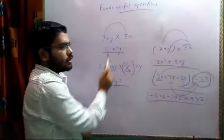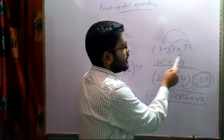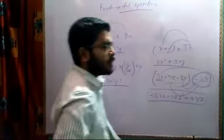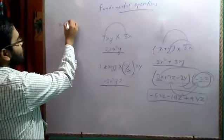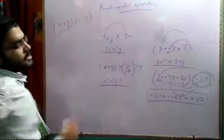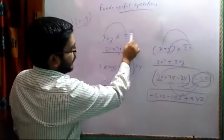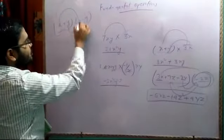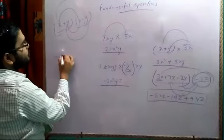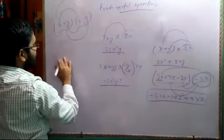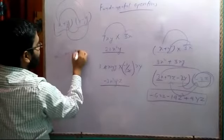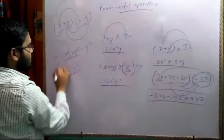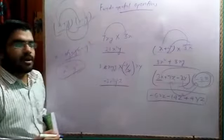This was multiplication of monomial with monomial, and monomial with binomial. Now for binomials, we can multiply like x plus y into x minus y. We get x into x which is x square, x into minus y which is minus xy, y into x which is yx, and y into minus y which is minus y square. The xy terms cancel, giving x square minus y square — which you may recognise as the formula for a² minus b².